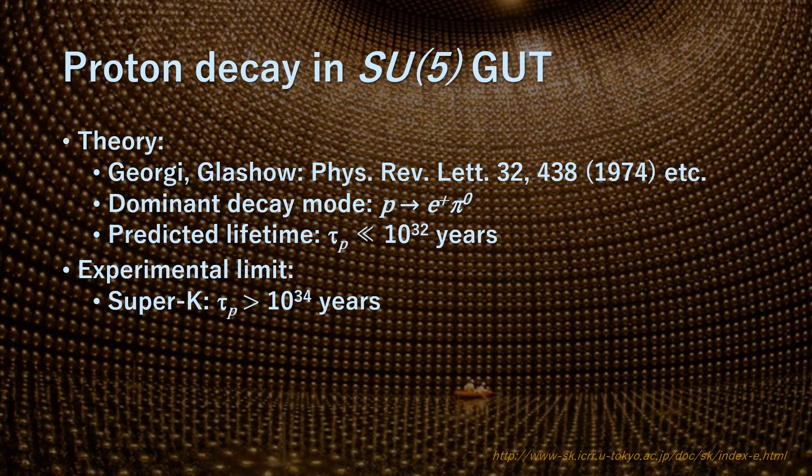Baryon number is necessarily violated in any grand unified theory (GUT). In the SU(5) GUT, nucleons decay via the exchange of gauge bosons with GUT scale masses. The dominant decay mode of the proton is into a positron and a neutral pion. In any simple gauge symmetry with one universal GUT coupling and scale, the nucleon lifetime from gauge exchange is calculable. Hence, the GUT scale may be directly observed via the extremely rare decay of the nucleon.